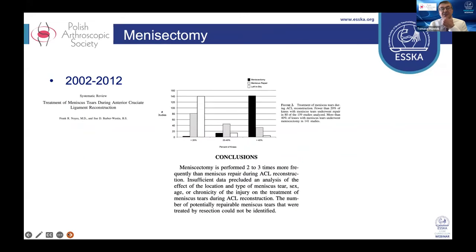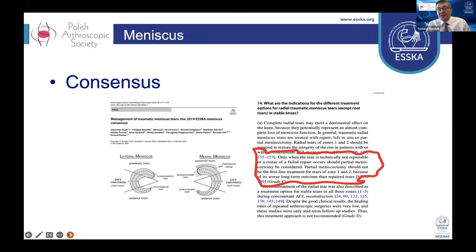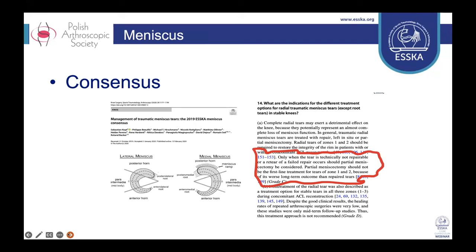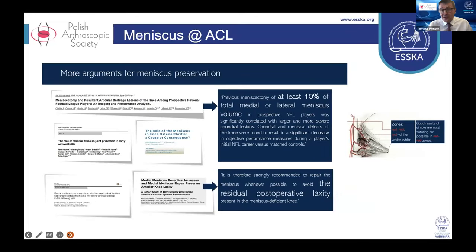Ten years ago, together with ACL surgery we often also performed meniscectomy. We have to change this thinking because it doesn't create good knee stabilization. In our ESCA consensus presented in 2019, we established that we should really take care of the meniscus and repair everything that is repairable. We now have a lot of good equipment from industry. Why should we suture the meniscus and save it together with ACL? Because if we resect the meniscus, we create future arthrosis and residual postoperative laxity.